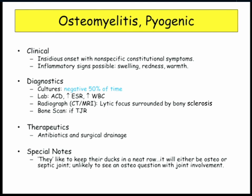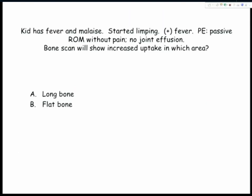Treatment: antibiotics and surgical drainage. The osteomyelitis questions come with a big tattoo on them saying osteomyelitis — you're not going to struggle between osteomyelitis and septic joint. The osteomyelitis question is probably going to be in a sickler because they want you to choose salmonella. Here's a series of review questions.